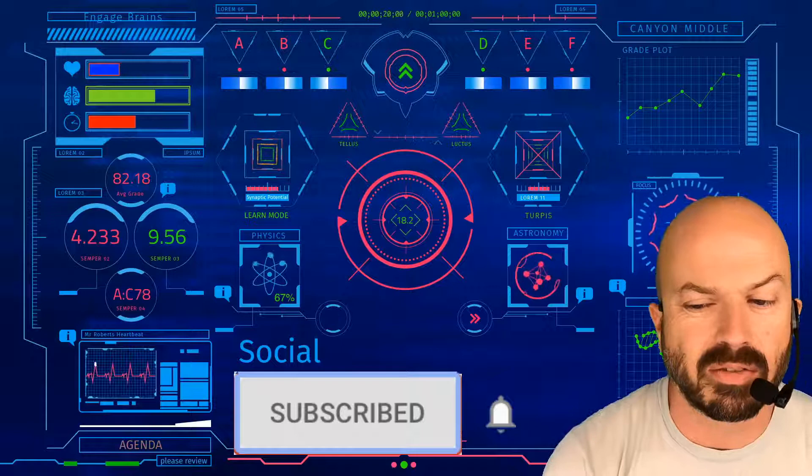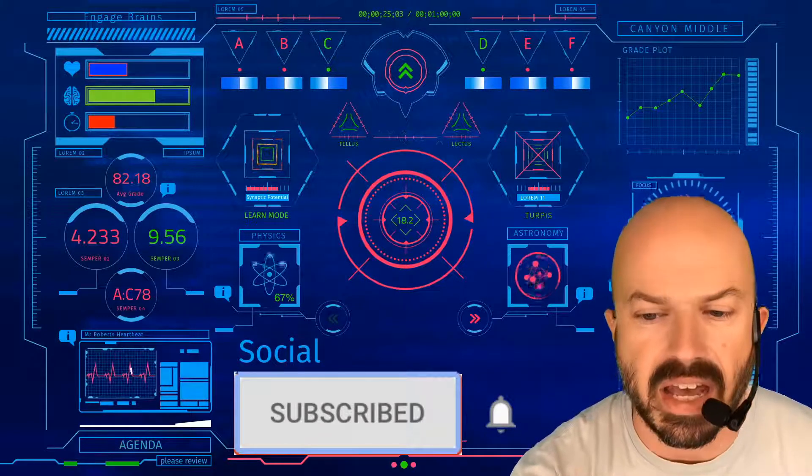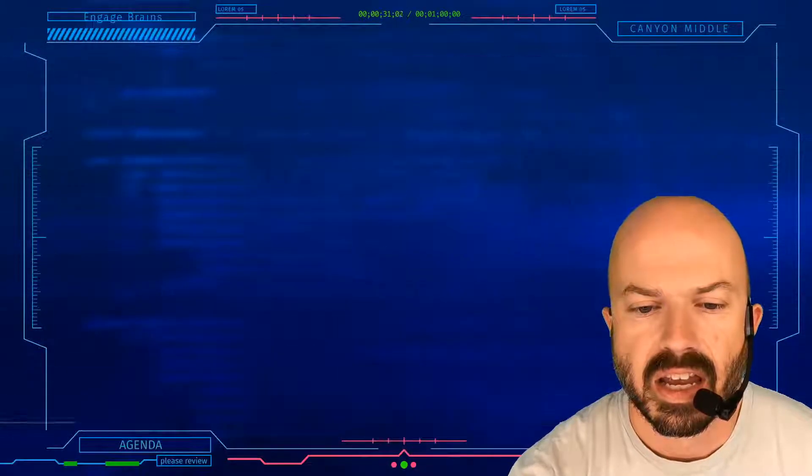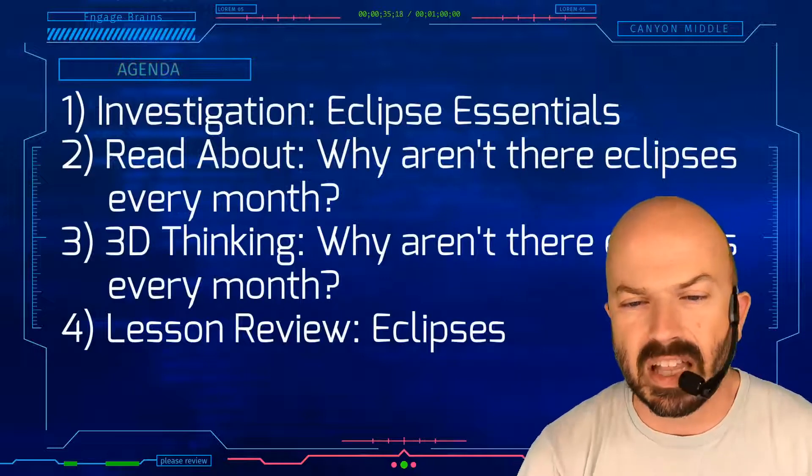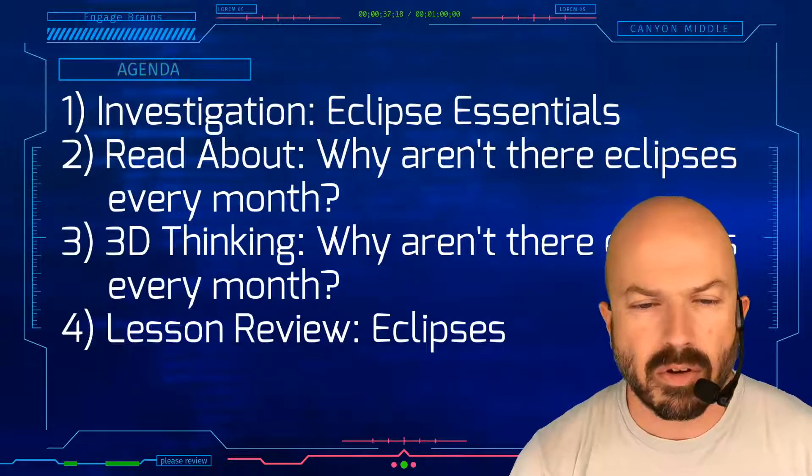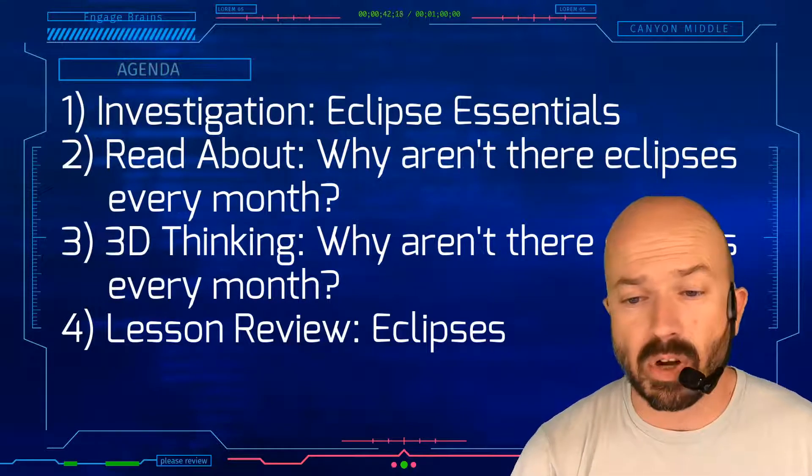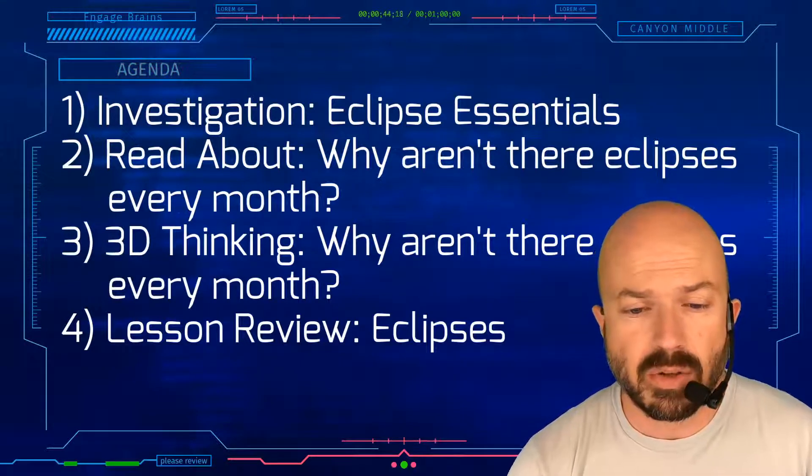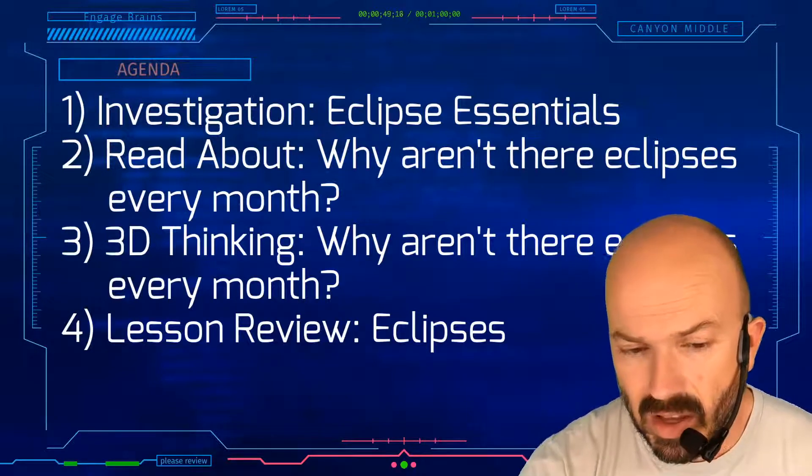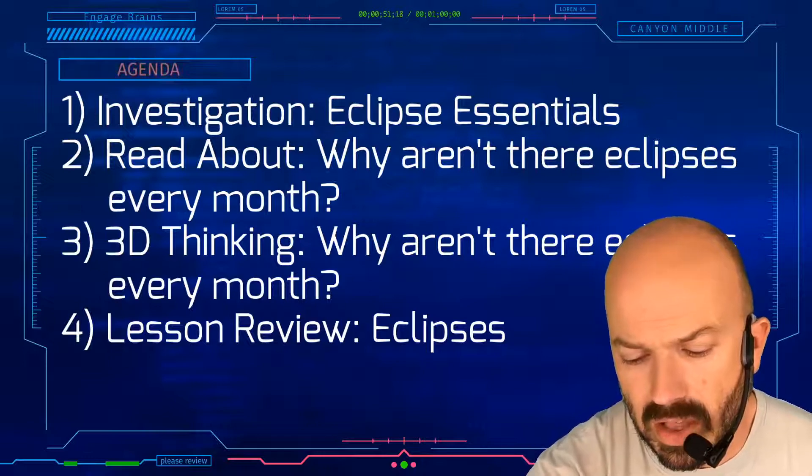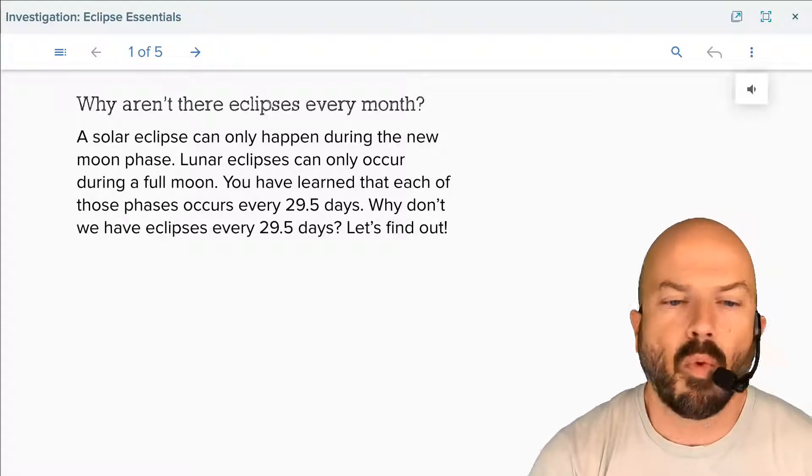Let's see what our agenda is for today. We've got four things we're going to be doing: an investigation about eclipse essentials, we're going to read about why aren't there eclipses every month, we're going to do a little 3D thinking about that question, and we're going to do our lesson review on eclipses. That'll finish this lesson up. Let's go to the classroom.